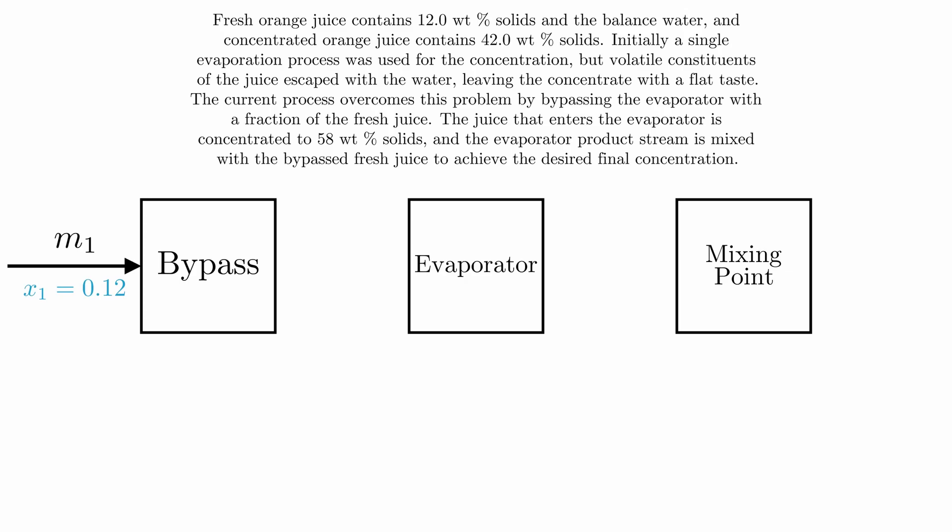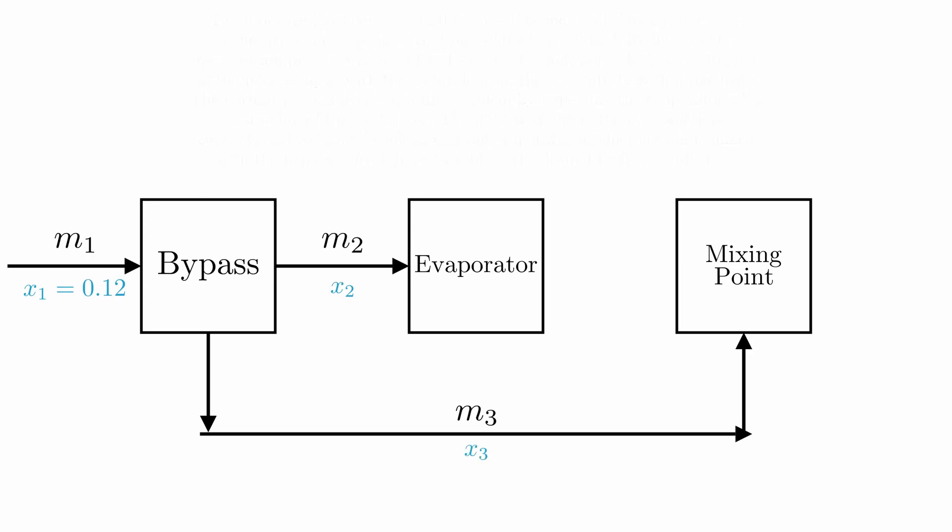So part of the output from the bypass unit is entering the evaporator, which I'll label as M2, and the other part is bypassing the evaporator into the mixing point, which is going to be labeled M3. So what do you think the evaporator is doing? That's right, it's evaporating water, which I'll label this stream as M4. The output of the evaporator into the mixing point I'll label as M5, and then finally the product will be M6.